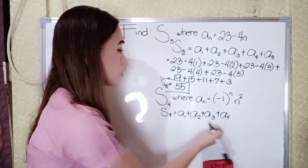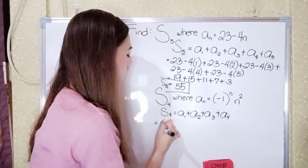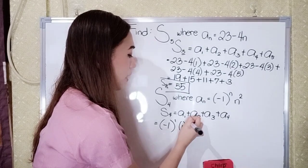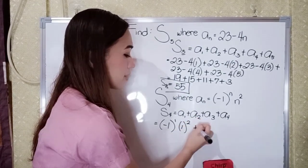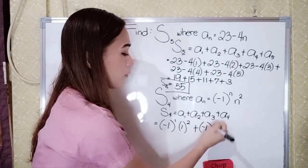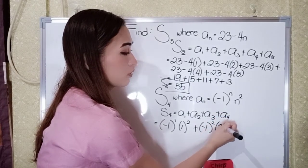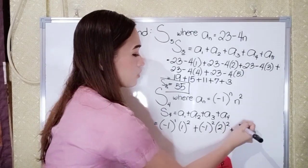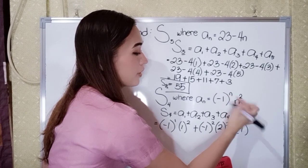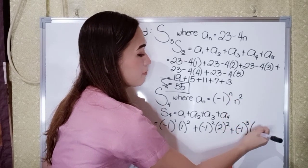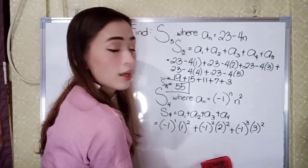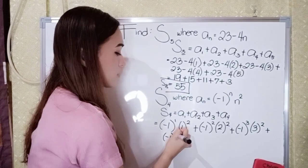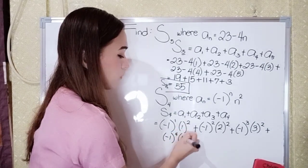Let's substitute. So we have negative 1 raised to 1 times 1 squared, plus negative 1 raised to 2 times 2 squared, plus negative 1 raised to 3 times 3 squared, plus negative 1 raised to 4th power times 4 squared.